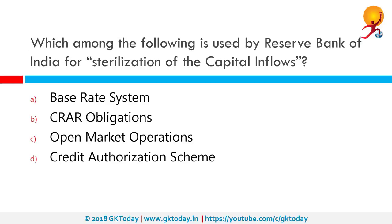Which among the following is used by the Reserve Bank of India for sterilization of capital inflow? The correct answer is open market operations. Open market operations refer to the purchase and sale of government securities by RBI from or to the market, with the objective of adjusting rupee liquidity on a durable basis. When RBI sells government securities, banks purchase them and have reduced ability to lend. When RBI purchases securities, commercial banks have more surplus cash, creating more credit. In case of excess liquidity, RBI sells GSECs to suck out rupee; in case of a liquidity crunch, RBI buys securities from the market.